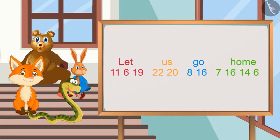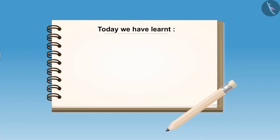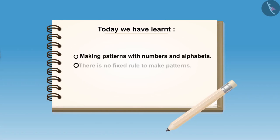Yes, this is the rule of Bholu. Let will be 11, 6 and 19. Us will be 22 and 20. Go will be 8 and 16. Home will be 7, 16, 14 and 6. So kids, this is it for today. Today we have learnt about making patterns with numbers and alphabets and that there is no fixed rule for creating such patterns. We can easily make them by using our own rule.